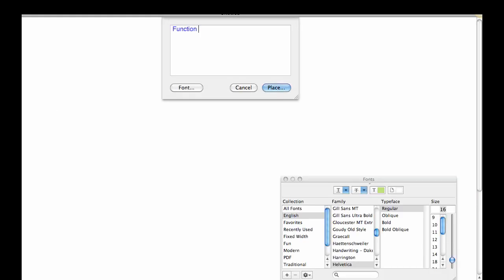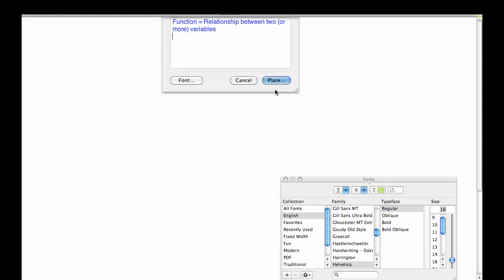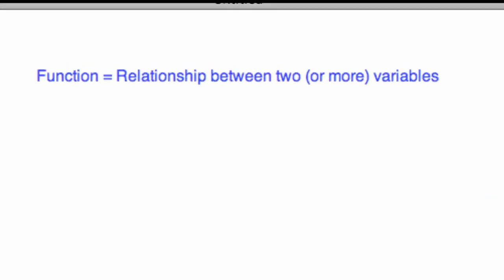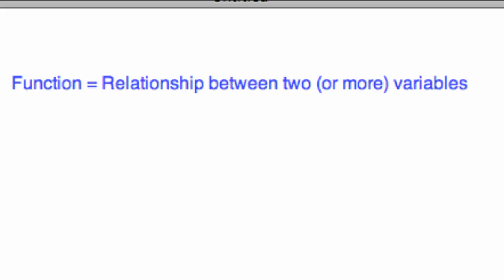Very simply put, a function—it's got some crazy definitions in your book—but the function is really simple actually. A function is just a relationship between two, sometimes more, variables. So we're going to put that up top here so we can see it. A function is a relationship between two or more variables.